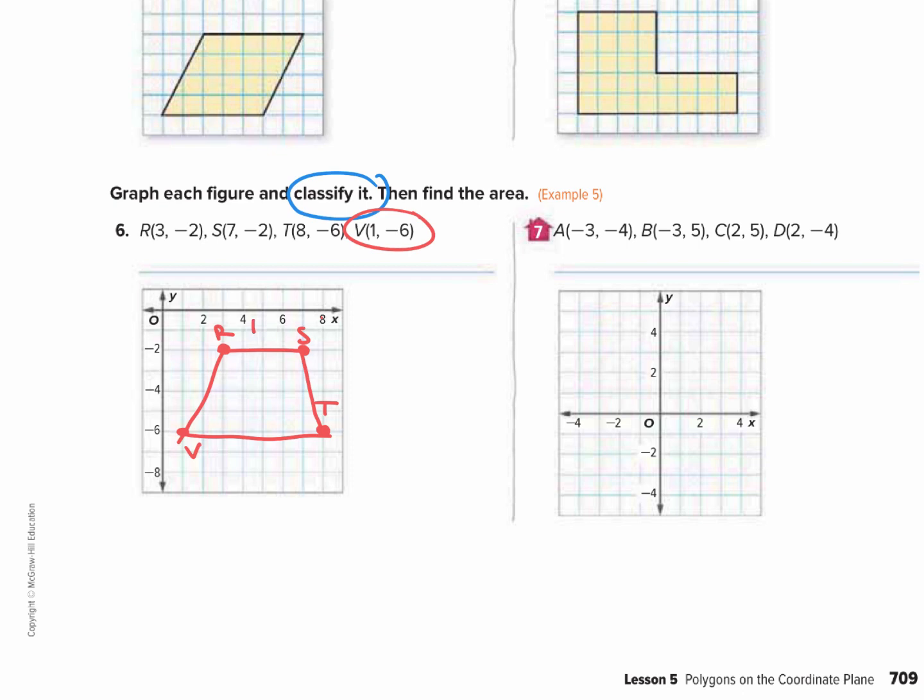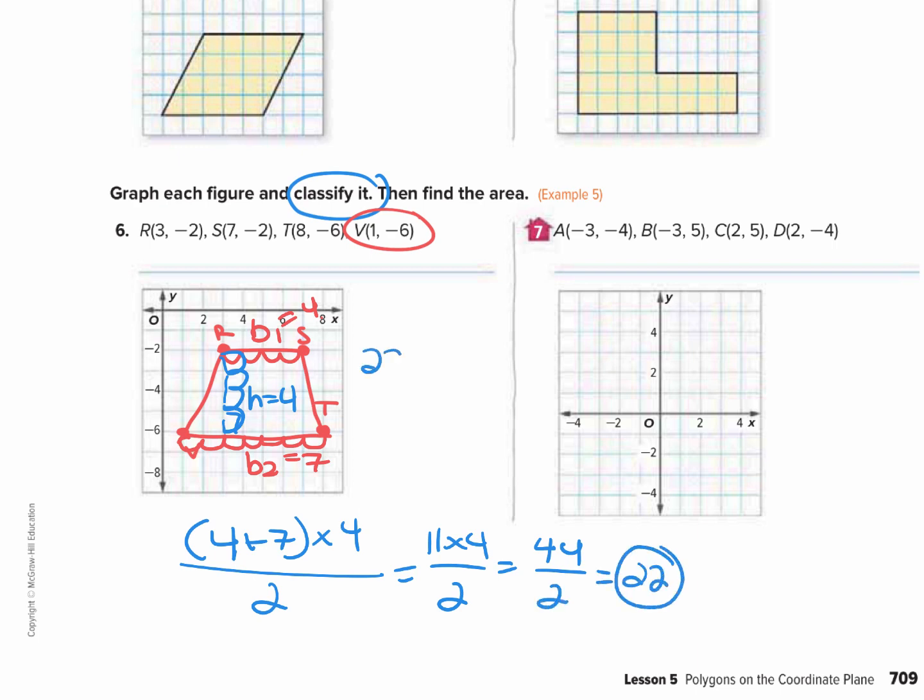So let's find the measurements. Base 1 is 1, 2, 3, 4. Base 2 is 1, 2, 3, 4, 5, 6, 7. Now we have to find the height, which has to be 90 degrees, so 1, 2, 3, 4. Base 1 plus base 2 times the height divided by 2: 7 plus 4 is 11, 11 times 4 is 44, so we get 22. So the area of this is 22 units squared.